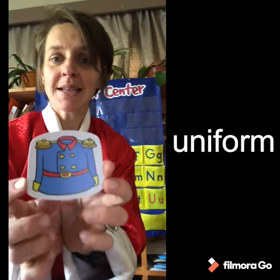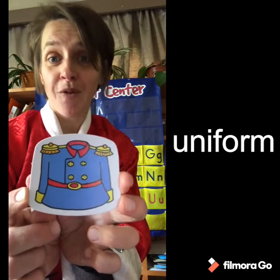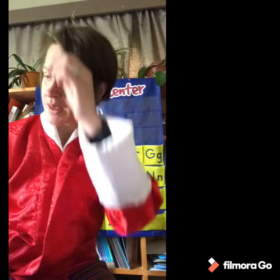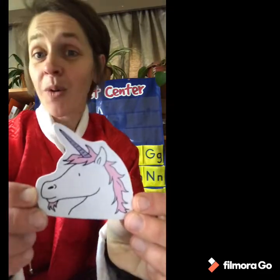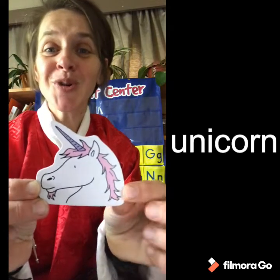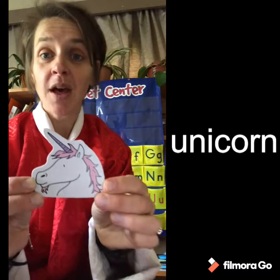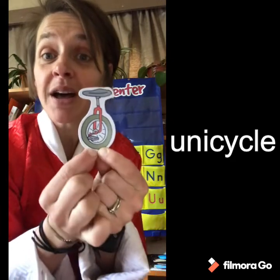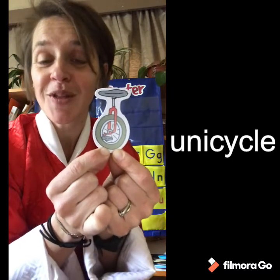The second sound of U is its name. So the first sound is 'uh' and the second sound is its name. Here are some pictures with that sound. This is a uniform — uniform starts with U. This is a unicorn — unicorn starts with U. And the last one is unicycle. Have you ever seen one of these? It is a bicycle but with one wheel, so it's called a unicycle. Unicycle starts with U.